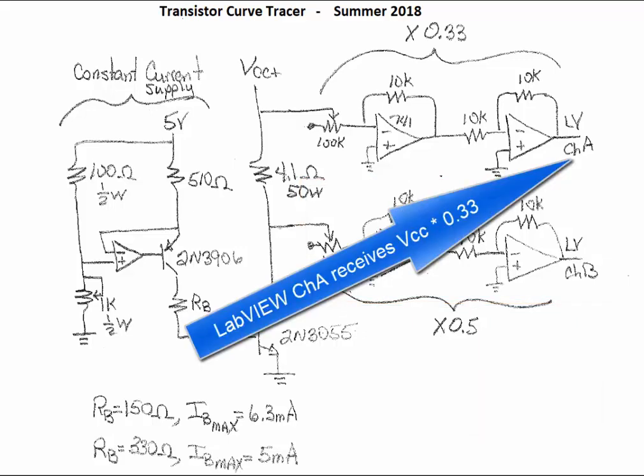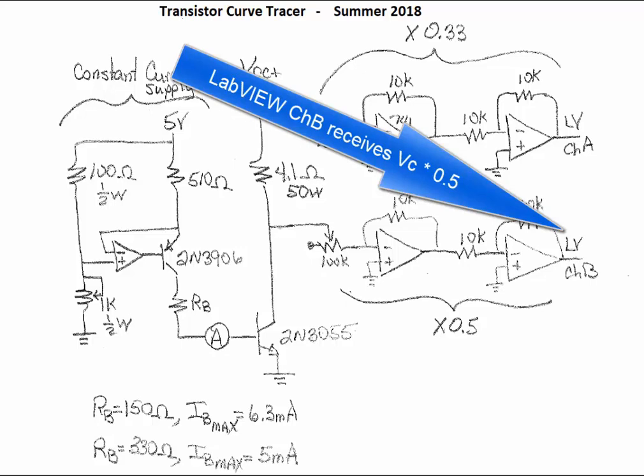LabView channel A receives VCC times one-third. LabView channel B receives the collector voltage times one-half.